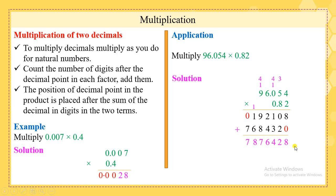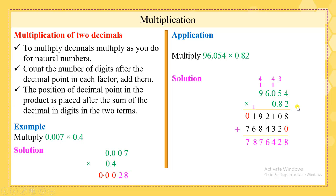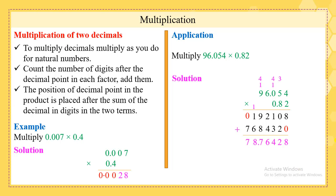Now we are going to place the decimal point. We count the digits after the decimal point: the first number has 3 digits and the second number has 2 digits after the decimal point. 2 plus 3 is 5. Starting from the right side, leave 5 digits and then place your decimal point. Our product is 78.76428.